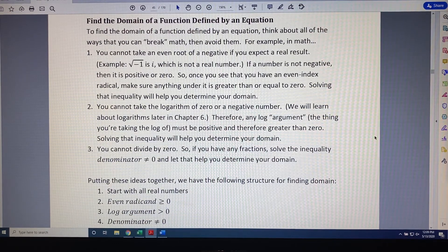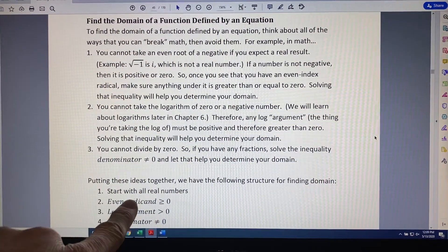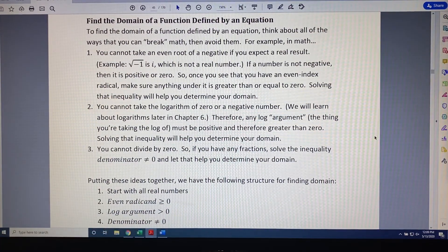Step two, if there are any even index radicals, then the thing underneath, which we call the radicand, must be greater than or equal to zero.